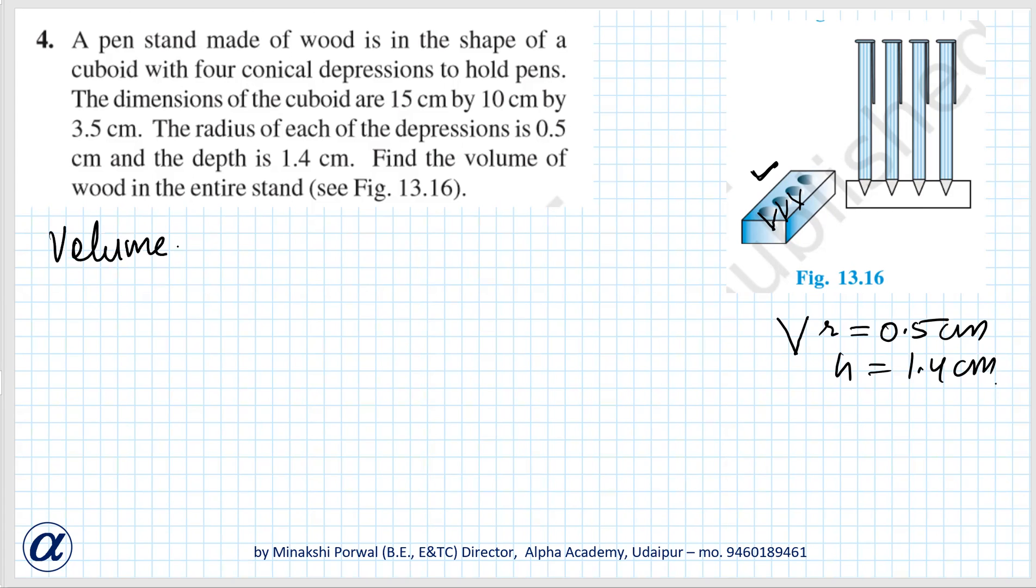Volume of cuboid is equal to length into breadth into height. It is 15 into 10 into 3.5, that is equal to 525 cm cube.